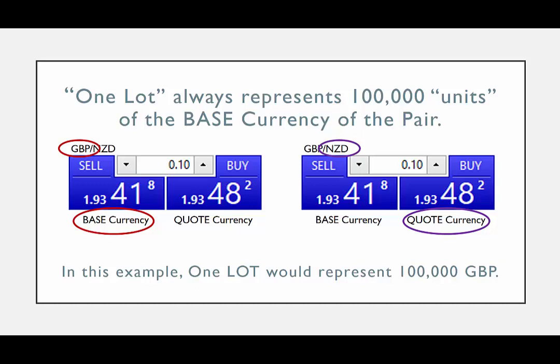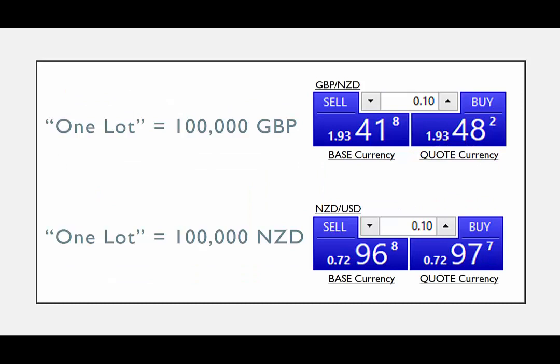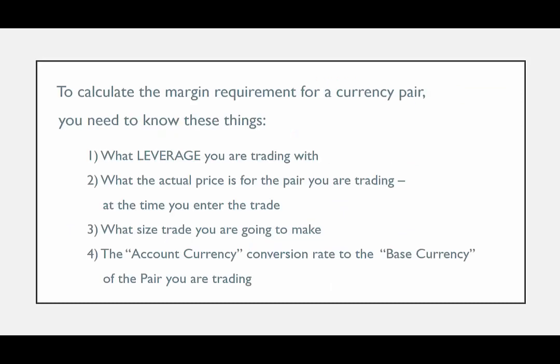The most common size for a currency transaction is called a lot. One lot is always 100,000 units of the base currency. So in this example, one lot would represent 100,000 GBP. In the example of the NZD-USD pair, one lot would equal 100,000 New Zealand Dollars.